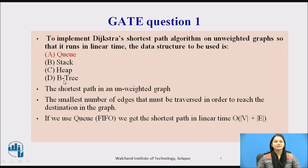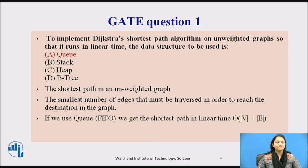As we have seen, the shortest path in an unweighted graph requires the smallest number of edges to be traversed in order to reach the destination. Using a Queue — which is first in first out — we can keep the smallest edges and delete them accordingly. So if we use a Queue, we can get the shortest path in linear time.